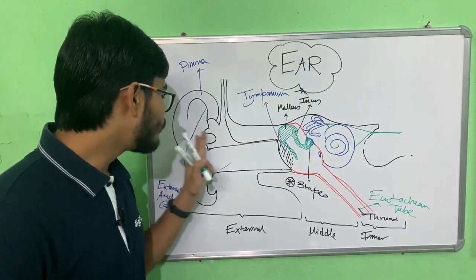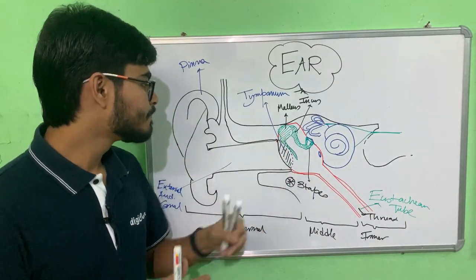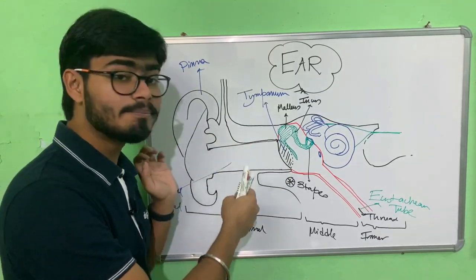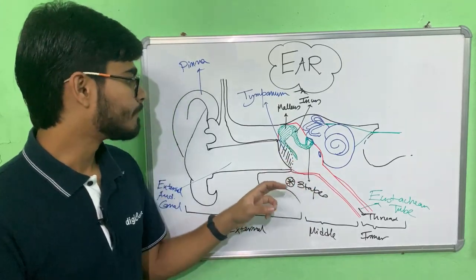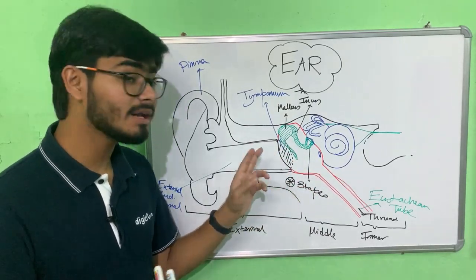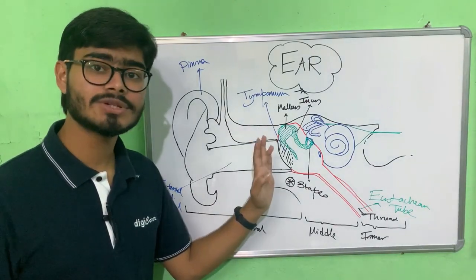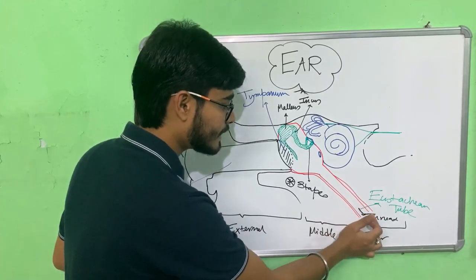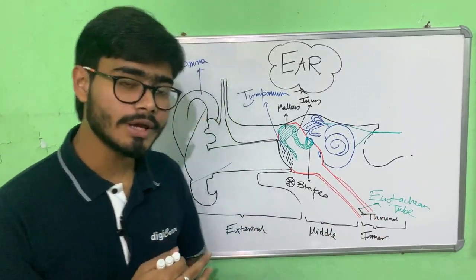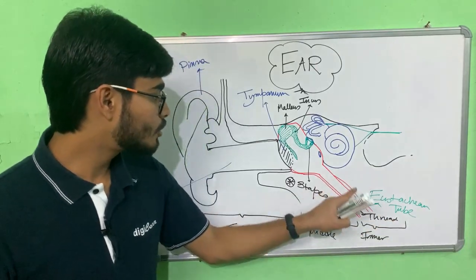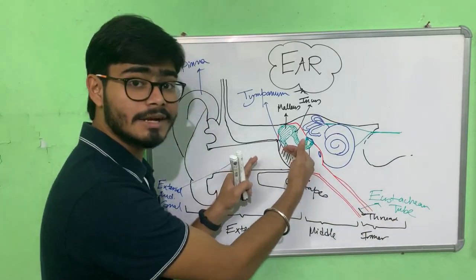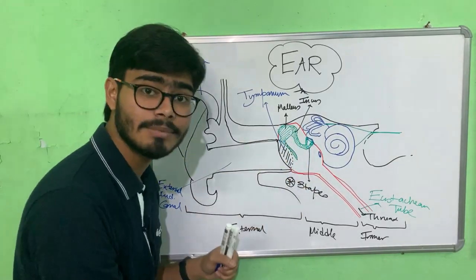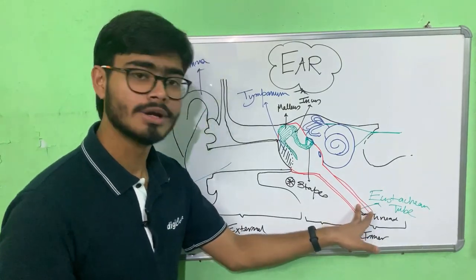The Eustachian tube connects the middle ear to the throat because when high-pressure sound waves hit the tympanic membrane, it can bulge inward towards the middle ear cavity and may even burst. The throat also has air pressure, so it transmits air pressure to the middle ear cavity and equalizes the pressure on both sides, preventing the tympanic membrane from rupturing. It's essentially a preventive measure.